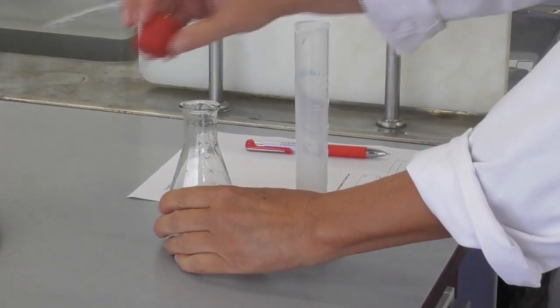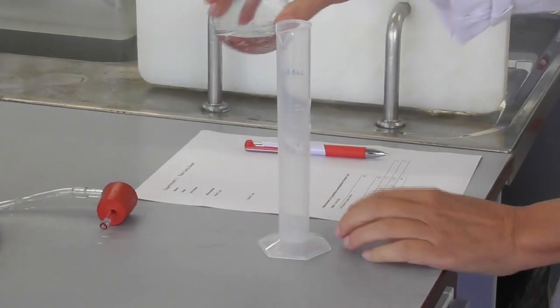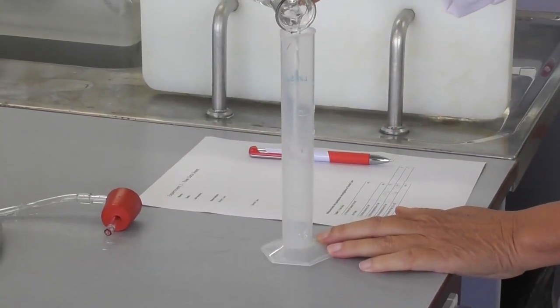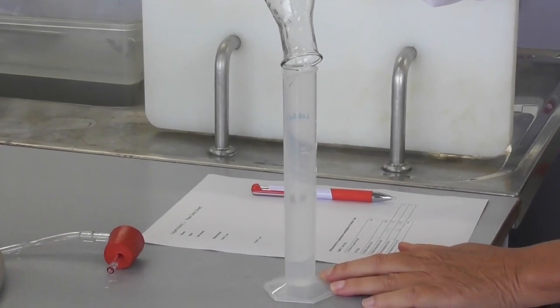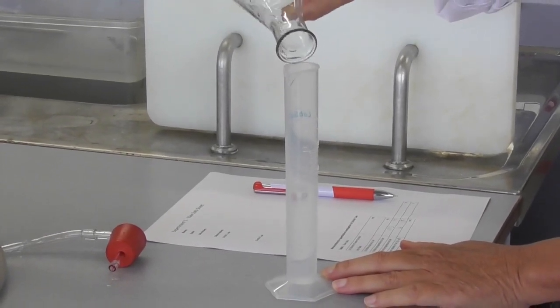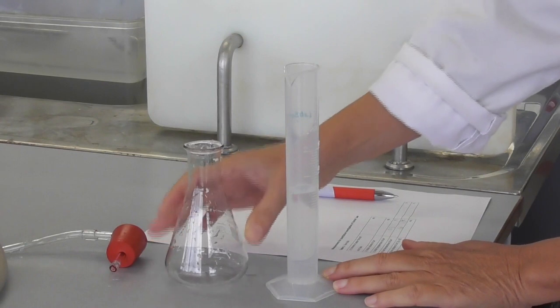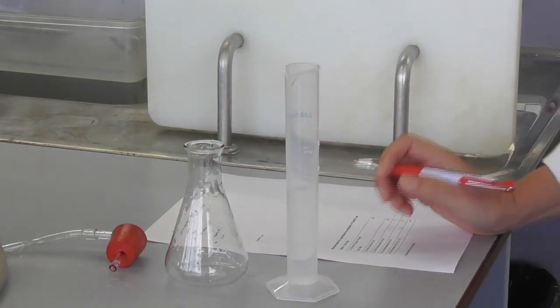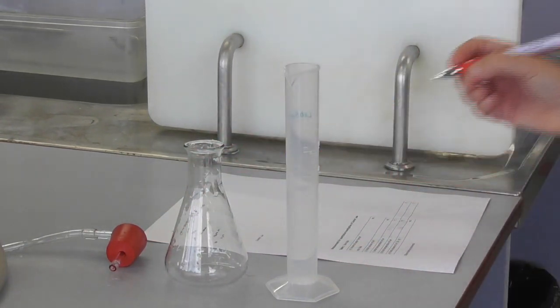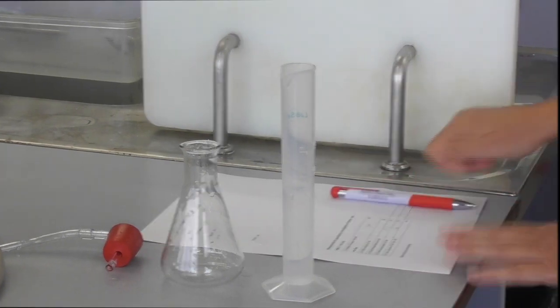To determine the volume of this water we pour the contents of the flask into a measuring cylinder and read the volume, and write this down on our sheet.